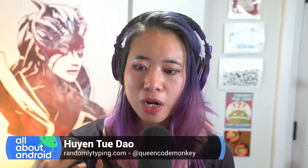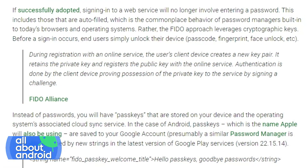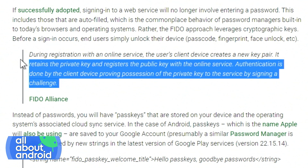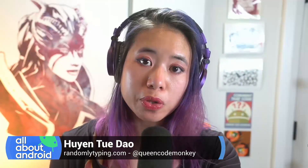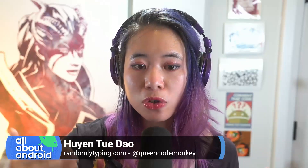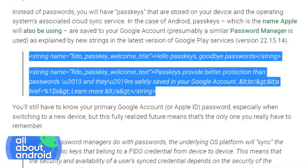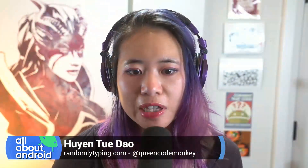If you want to register on a new online service, you'll basically be creating a new key pair. You keep your private key, which will be synced through Google, and the new service gets your public key. From then on, whenever you want to sign in, you don't have to enter a password — you just authenticate through Google, and everything will be cloud synced to your Google account.